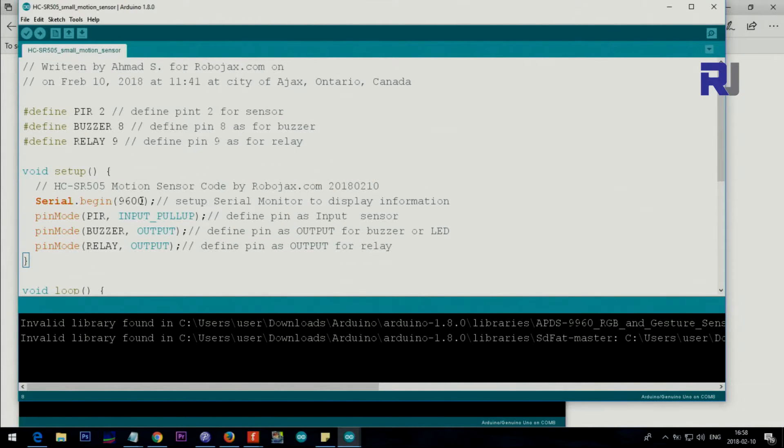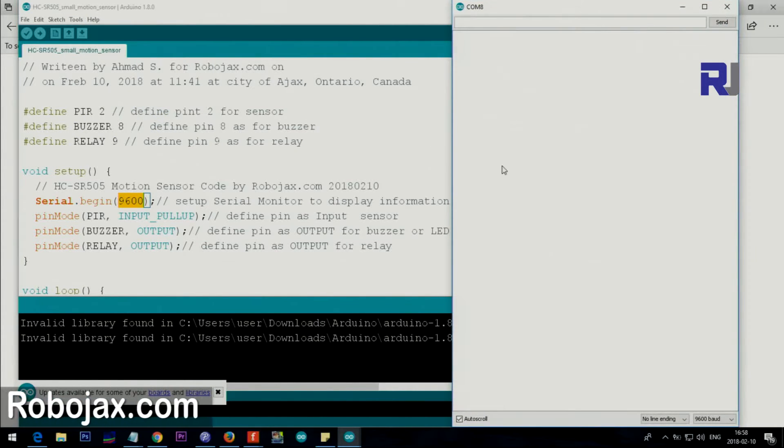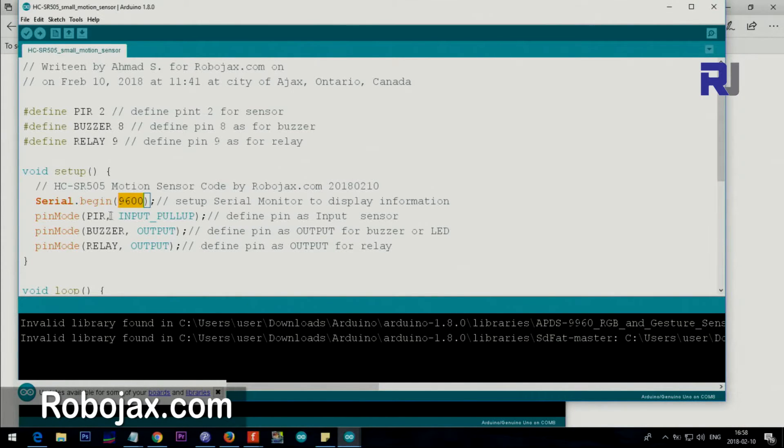And then PIR, that's pin 2, we put INPUT_PULLUP, and then buzzer and relay are as output to control the devices.